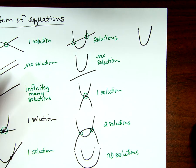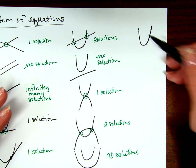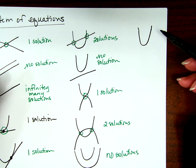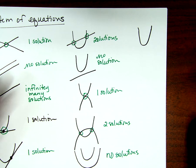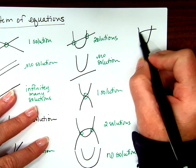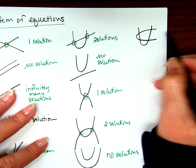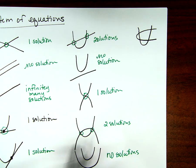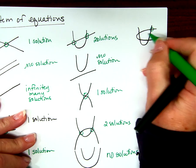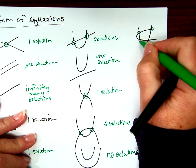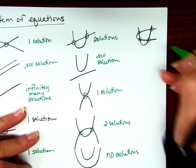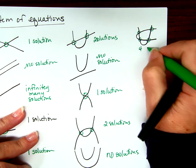How many different ways could it touch if it was a horizontal and a vertical parabola? Four — so like this, one, two, three, four. Four solutions.